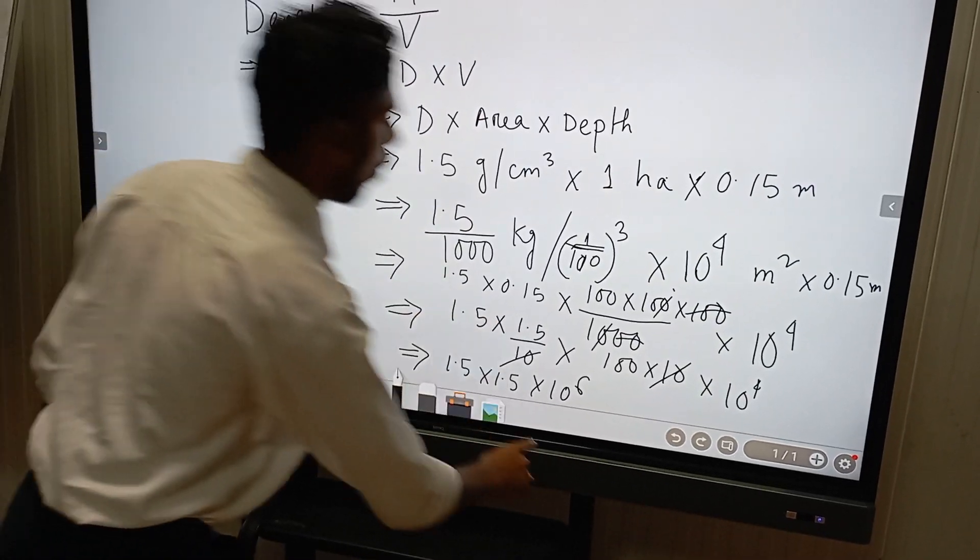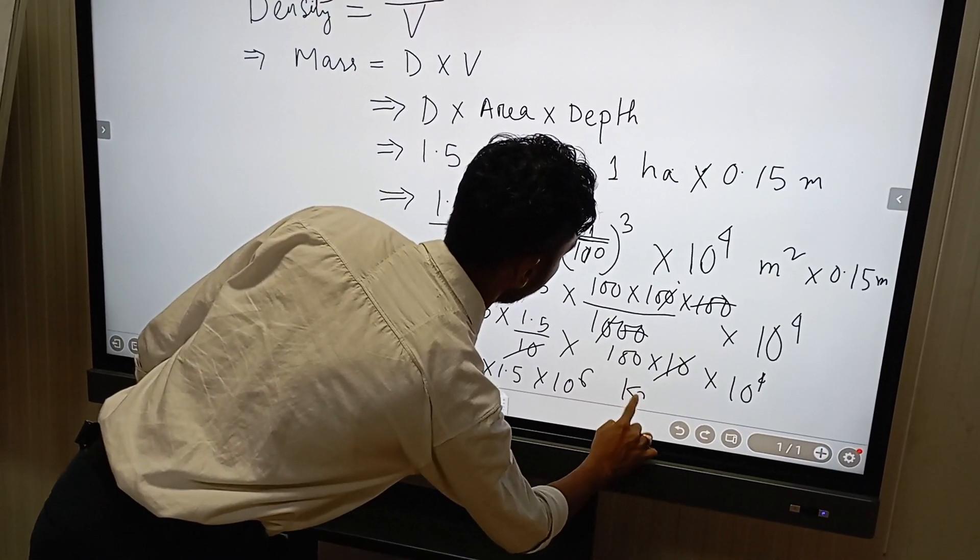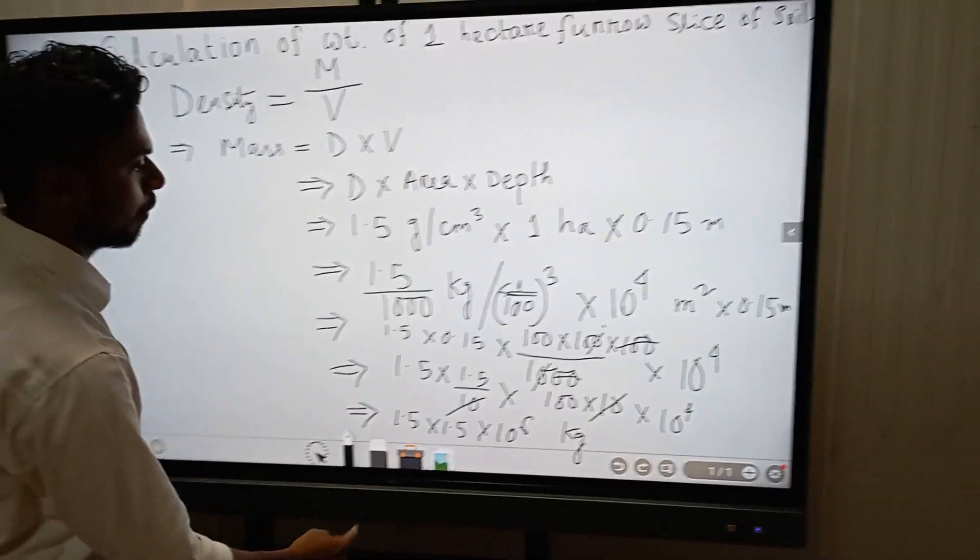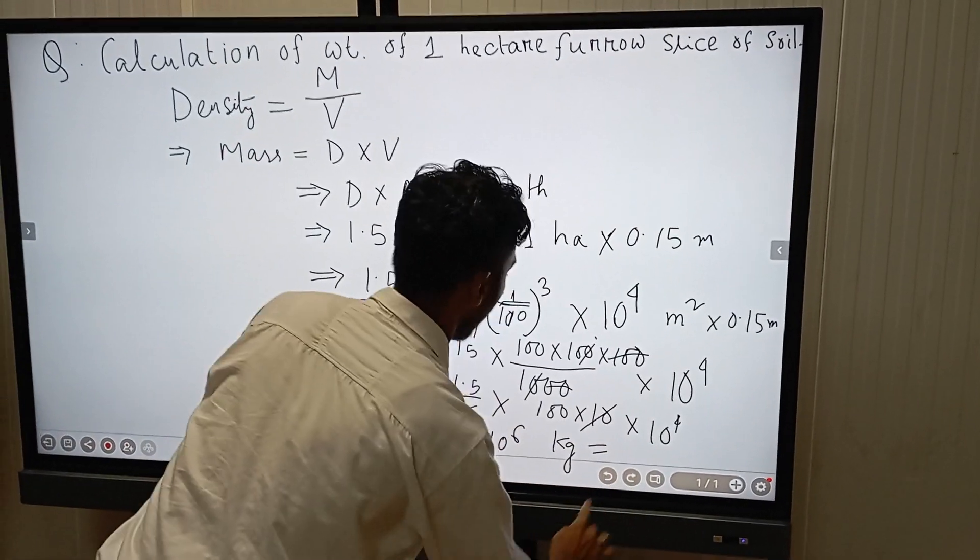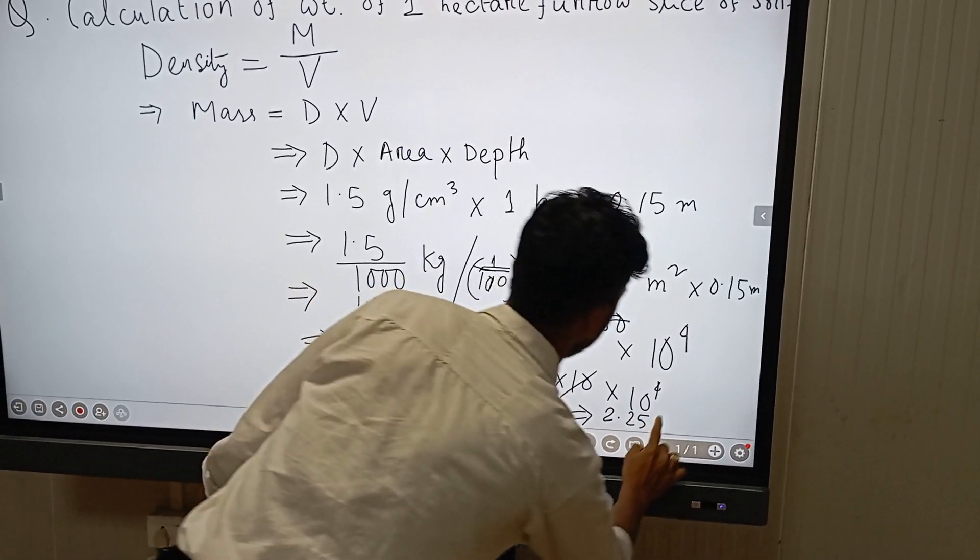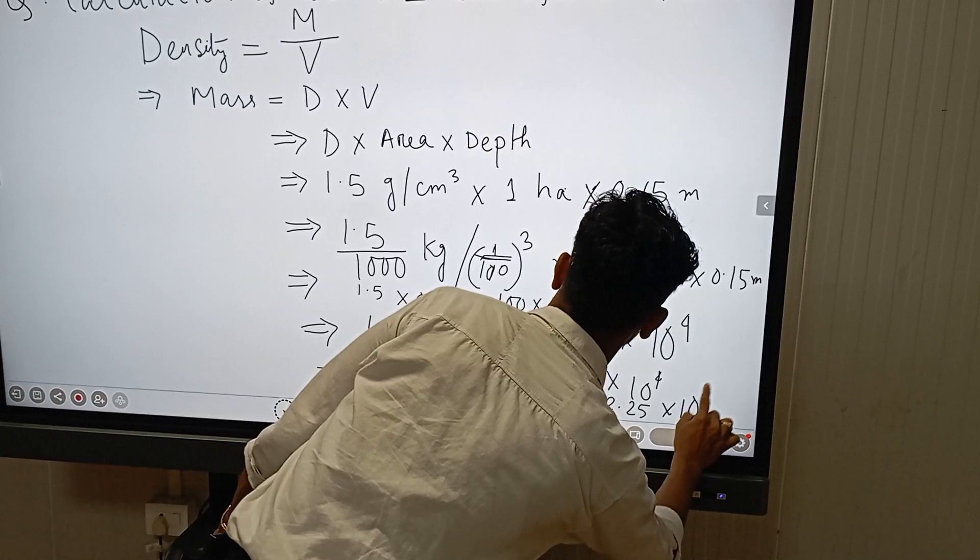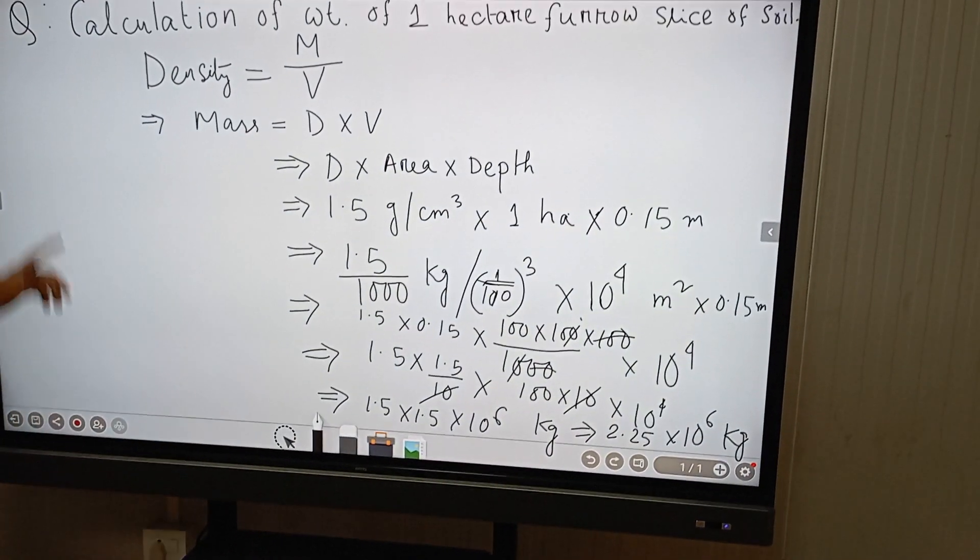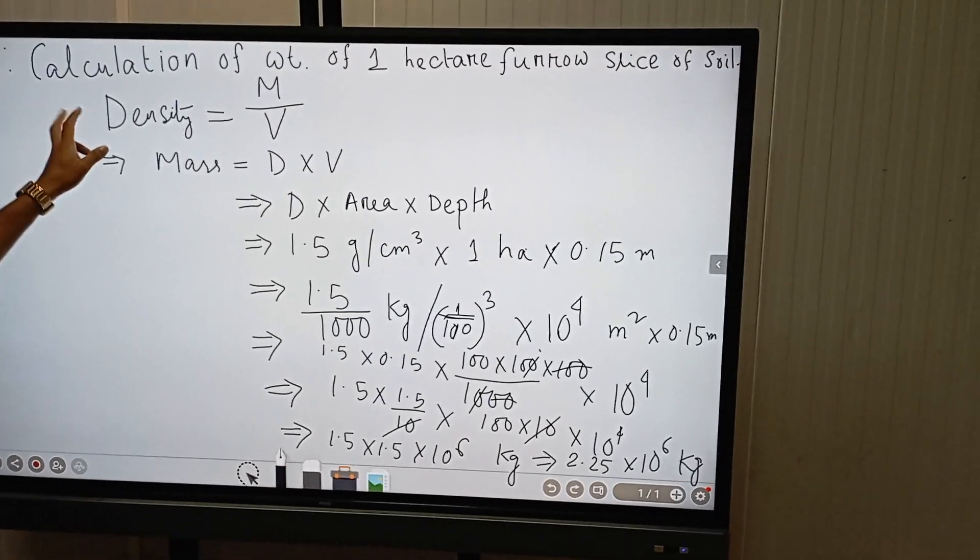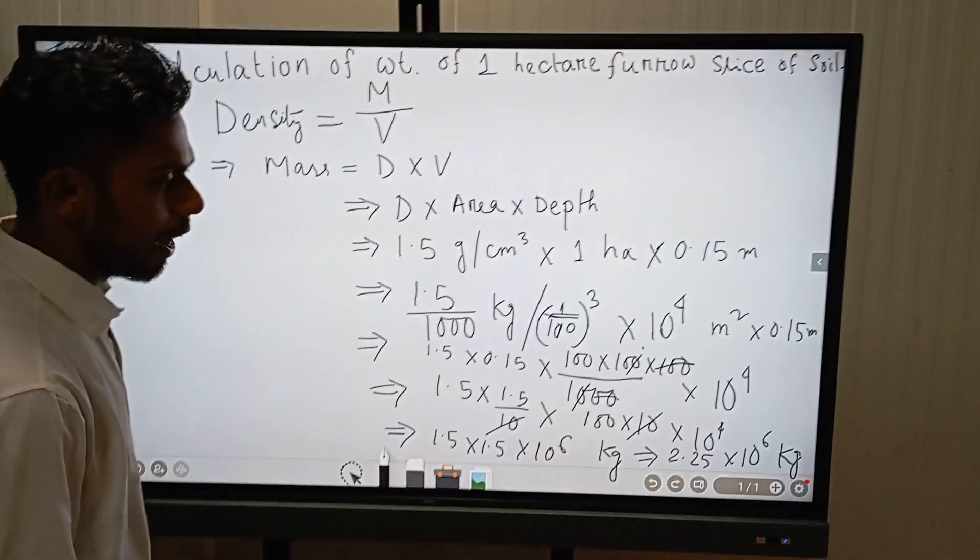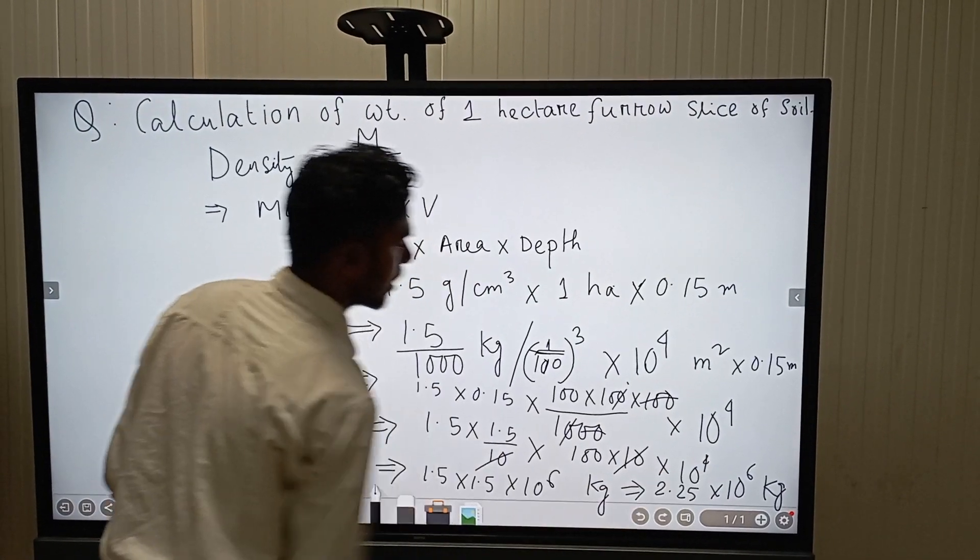And all units should be converted into kg. So coming to 1.5 times 1.5, which is 2.25 times 10 to the power 6 kg. So it should be very easy calculation - the weight of 1 hectare of furrow slice of soil is 2.25 times 10 to the power 6 kg.